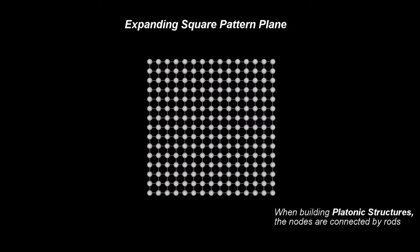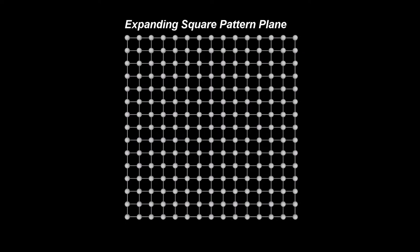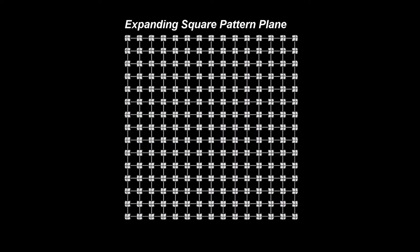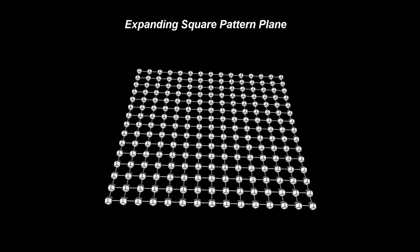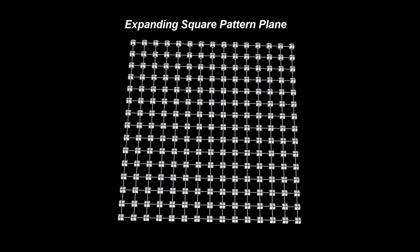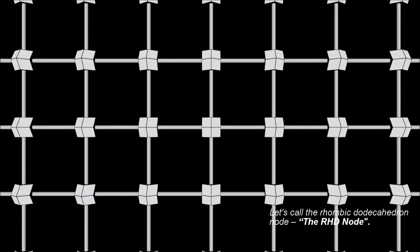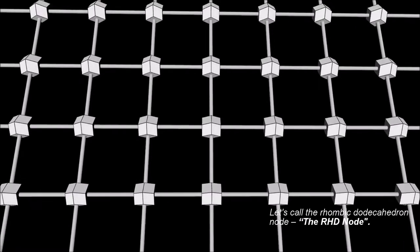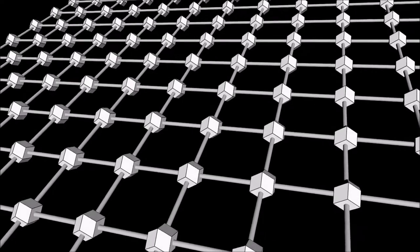When building platonic structures, the nodes are connected by rods. The square pattern is seen even better, with the sides of the squares determined by the rods. From now on, let's call the rhombic dodecahedron node the RHD node. The square pattern follows naturally when using RHD nodes to build planes.